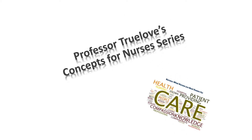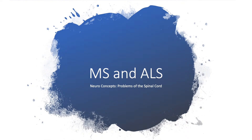Welcome back to Professor True Love's Concepts for Nurses series. In this episode, which is part of the neuro concepts problems with the spinal cord, we're going to be discussing two different conditions: multiple sclerosis and amyotrophic lateral sclerosis, or MS and ALS.